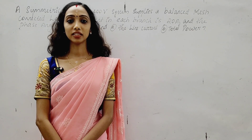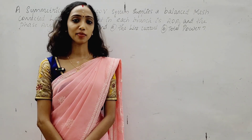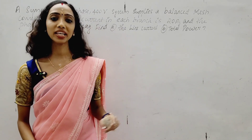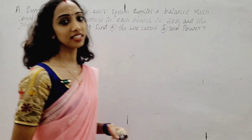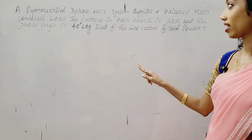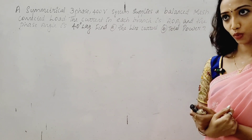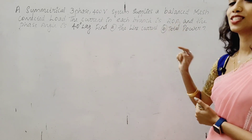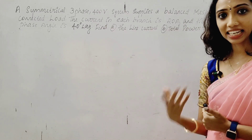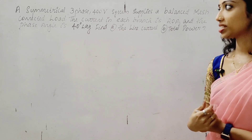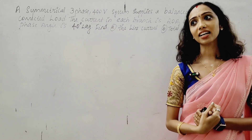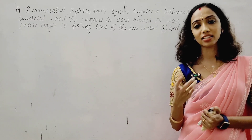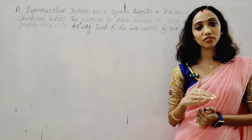Welcome to Balanced Delta Connected System and Circuits and Networks. This is a delta connected system. You can recollect the details of the star connected and delta connected. In a star connected system, line current is equal to phase current, and line voltage is equal to root 3 times phase voltage.